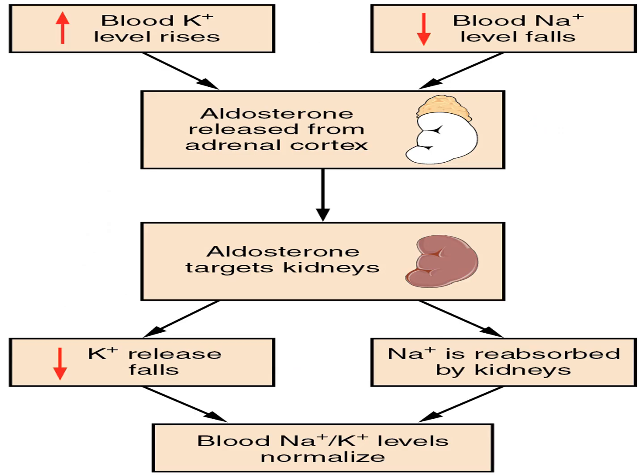Moving on but still related to sodium-potassium, here's a diagram of another important test in the laboratory: aldosterone. Aldosterone is involved in sodium-potassium function. It targets the kidneys and is released from the adrenal cortex. When sodium levels decrease and blood potassium levels increase, aldosterone targets the kidneys. Sodium is then absorbed by the kidneys and the blood sodium-potassium levels normalise, or potassium levels are released. Aldosterone is also involved in blood pressure regulation.